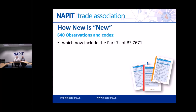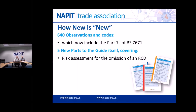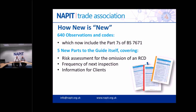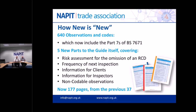We now include information on Part 7s of BS 7671, which is completely new - we didn't cover that in the last edition, but we've now included all of the Part 7s where relevant. We've got 5 completely new parts of the guide covering: risk assessments for the omission of an RCD, a whole section on frequencies and next inspections, information for clients, information for inspectors, and non-codable observations. The book has grown from 37 pages to 177 pages - almost quadruple - and we're really proud to get it out there.